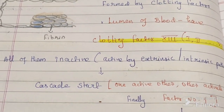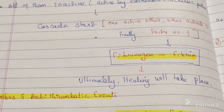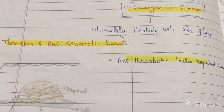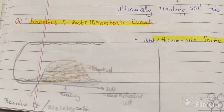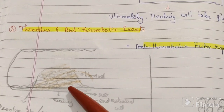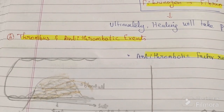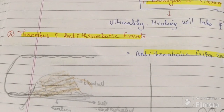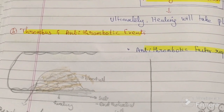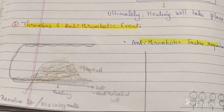The secondary clot is stabilized by fibrin. Ultimately, healing takes place because of the formation of the primary and secondary clot — platelet plus fibrin. Once healing occurs, antithrombotic factors are required to remove the obstructed area and resolve the clot. These are the four events we will discuss in detail.